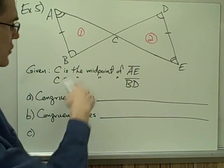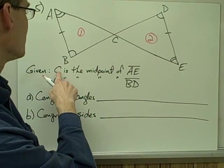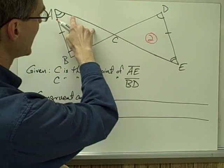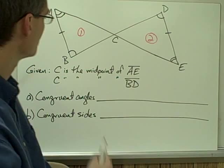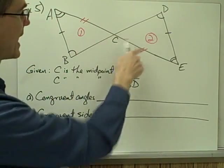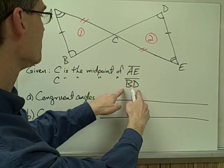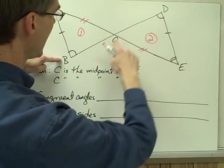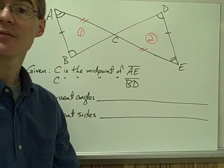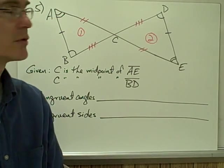However, for this problem I also have two given statements. The first says C is the midpoint of segment AE. If C is the midpoint of AE, then segment AC must be congruent to segment CE — that's the definition of a midpoint. I'll mark AC and CE as congruent using double hash marks. The second given statement says C is also the midpoint of segment BD, which means segment BC and segment CD must also be congruent by the definition of a midpoint, so I'll mark those with triple hash marks.